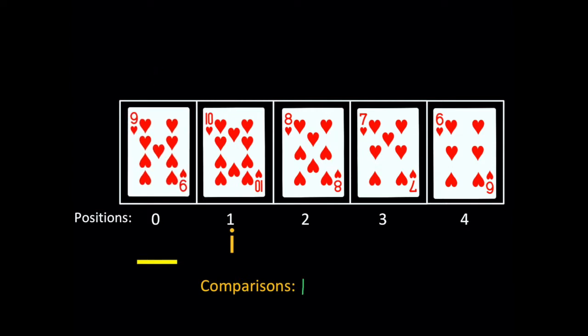Now the first two values are sorted. Now i moves to position 2. Sort pose moves to position 2 as well. 8 is the current value.